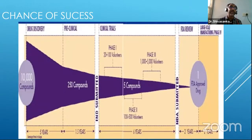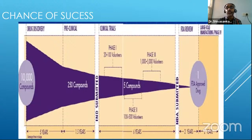We start off with probably around 10,000 molecules. The chance that you would reach one final molecule in a matter of probably around 12 to 13 years is one.